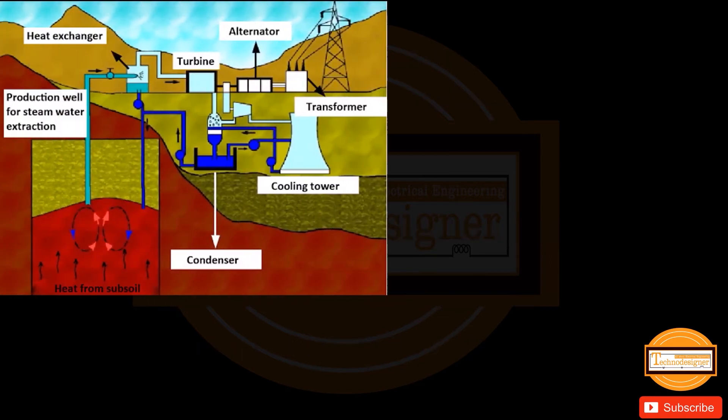In the geothermal power plant, heat from the subsoil moves to the production well for steam-water extraction, then to the heat exchanger, and on to the turbine. Some of the steam-water moves from the heat exchanger and turbine to the condenser for cooling, and then to the cooling tower. The steam-water in the turbine, with the help of an alternator, generates electricity.